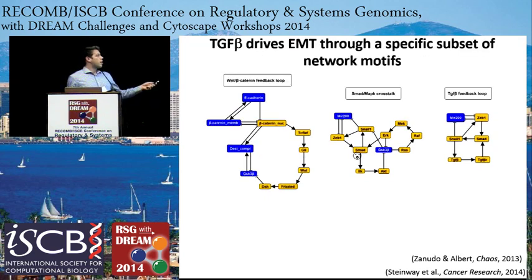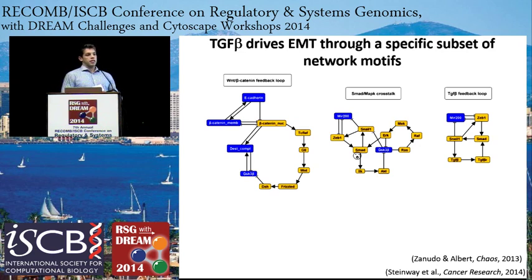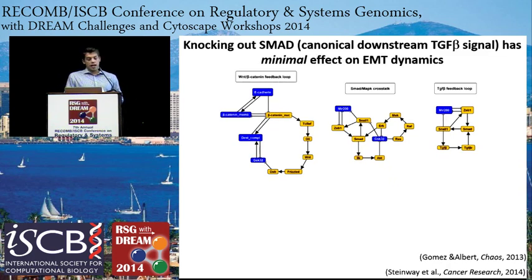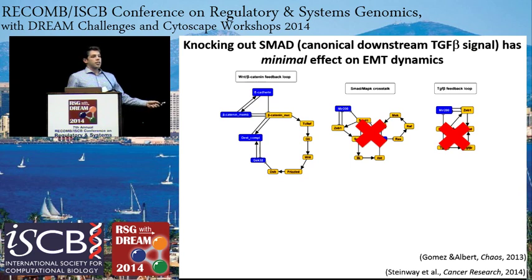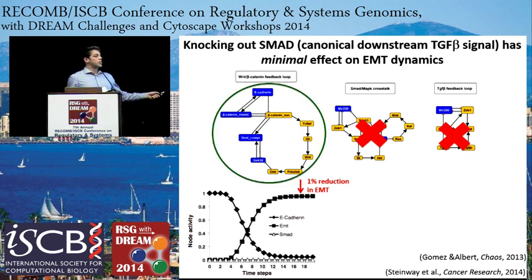We saw these interesting feedback loops, and another interesting thing was we saw a crosstalk partially related to the experimental work shown previously. We were next curious about perturbations to the model because our goal is to suppress this process. We started screening perturbations in silico and saw that with single perturbations we didn't really have much success. For example, focusing on the SMAD node, which is a canonical downstream target of TGF-beta signaling, we actually lose two of our stable motifs, but only get about a 1% reduction of EMT in silico—because there are other stable motifs that can still drive the EMT signal, not disrupted by knocking out SMAD in our model.